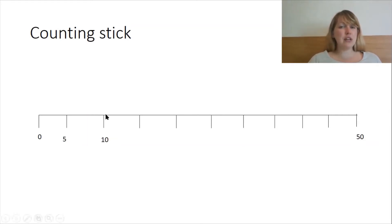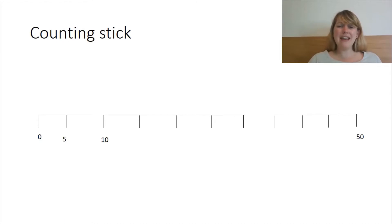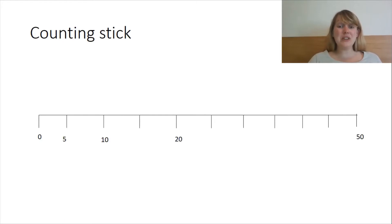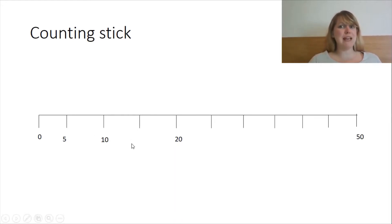Now here's a trickier one. Can you double 10? Yes, that's 20. Now, is it going to go here or here? Yes, you're right, it's going to go here. And you knew that because you know that multiples of 5 end in a 5 and a 0, and they make a pattern. So the number 20 couldn't possibly go there.